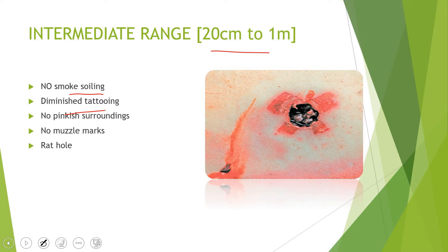Before discussing the spread of shot, remember that there won't be any pinkish surroundings and there won't be any muscle mark. Pinkish surroundings are due to gases of combustion — specifically carbon monoxide, which complexes with hemoglobin forming carboxyhemoglobin. This carboxyhemoglobin gives the pinkish tinge to close-range wounds. There is no muscle mark because that is a characteristic of contact wounds.